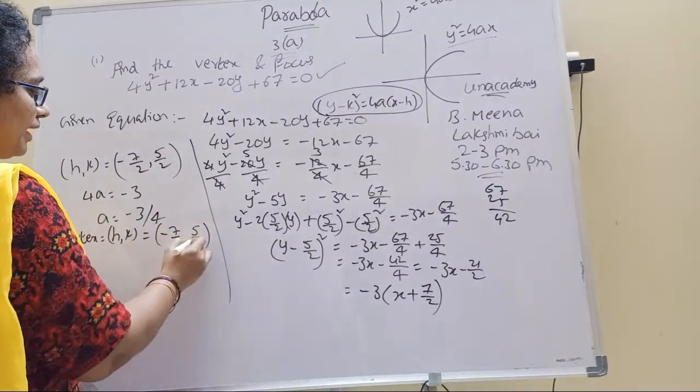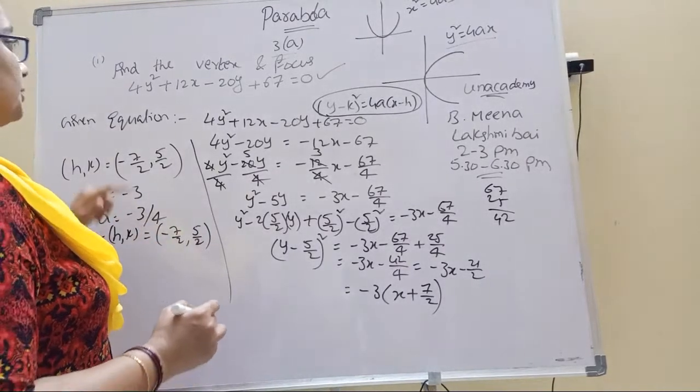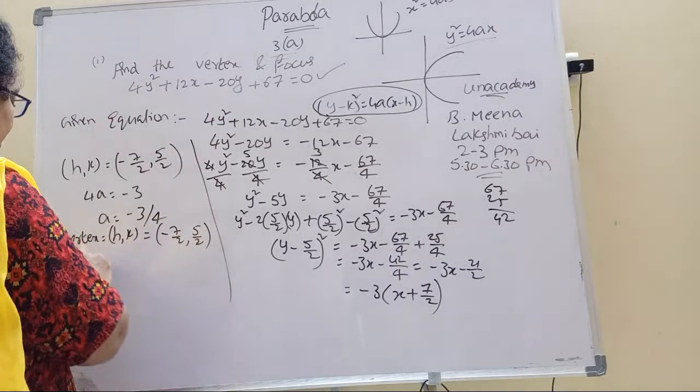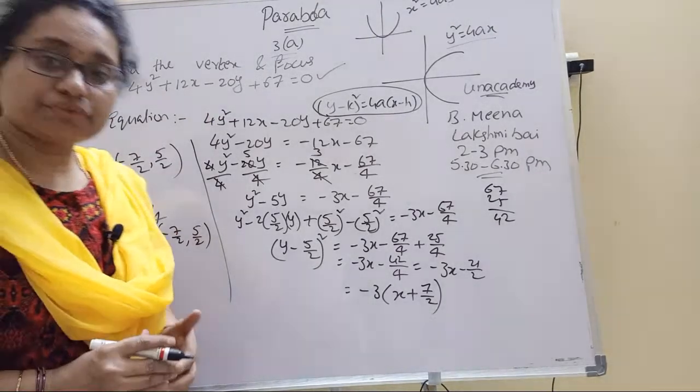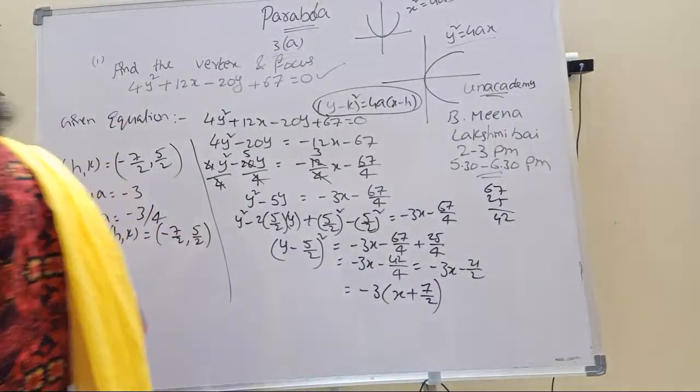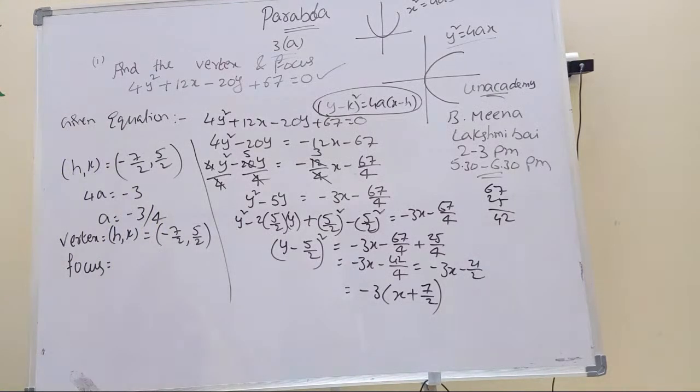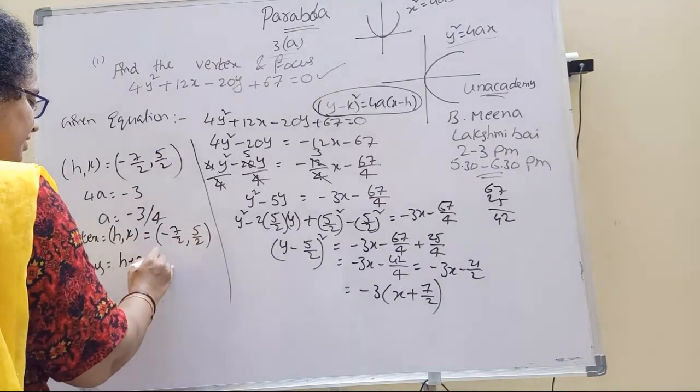Vertex equals minus 7 by 2, 5 by 2. Next, focus. What is the formula for focus? Focus formula is h plus a, k.